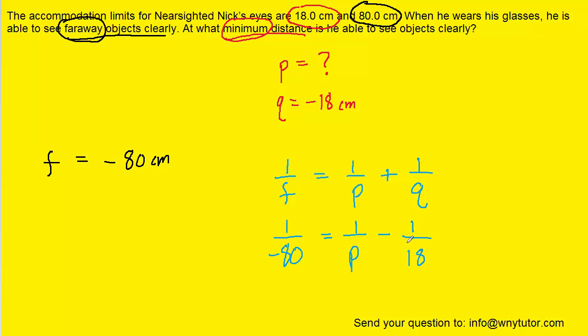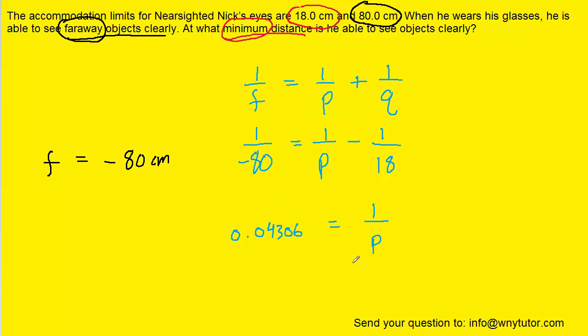We could then add the 1 over 18 over to the left hand side. And then in order to solve for p, what we can do is put this quantity over a 1. And whenever we have a fraction on one side and a fraction on the other side of an equation, we can actually invert both sides.